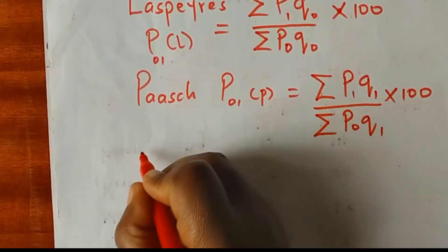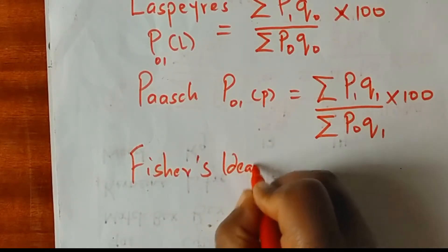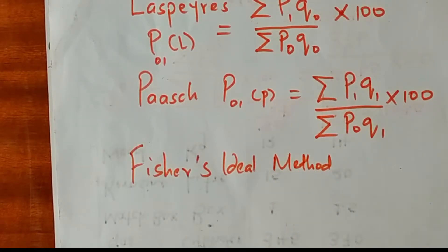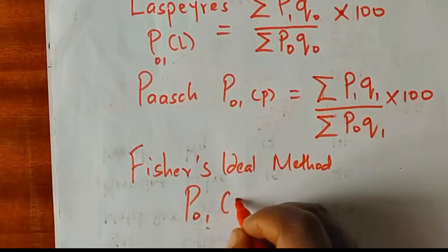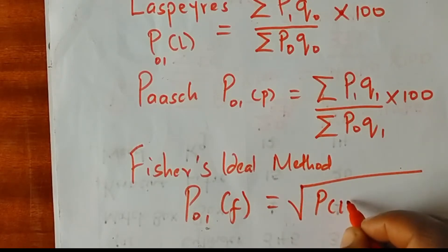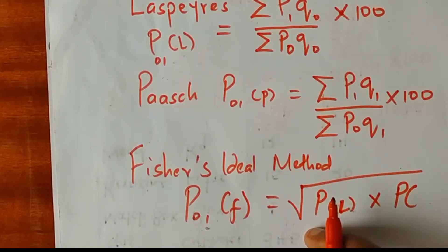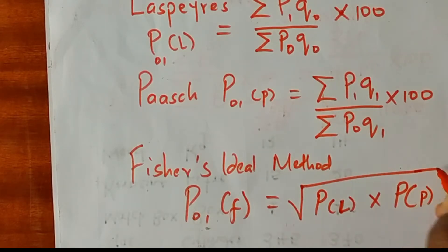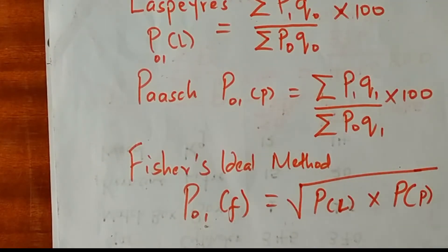Finally, the Fisher's Ideal method is a combination — it is the geometric mean of the two. The Fisher's Ideal index number is the square root of the product of the Laspeyres index and the Paasche index. Those are the three main methods for computing the weighted aggregate index number.